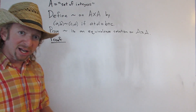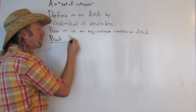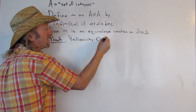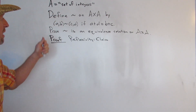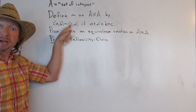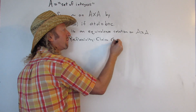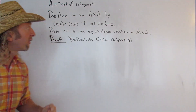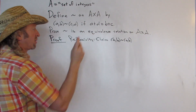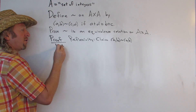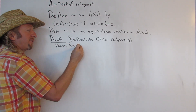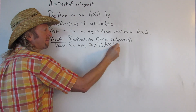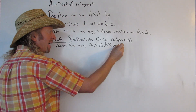We'll start by showing reflexivity. The claim is that AB is related to AB for all AB in the Cartesian product. So note, for any AB in A cross A, what does it mean for AB to be related to AB?